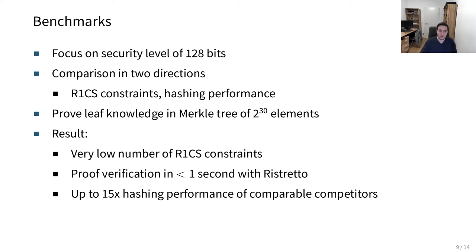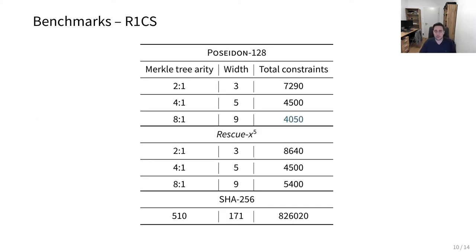We can take a closer look at that. For example, this is a table showing the rank 1 constraints we have and the number of them. Lower is better here. You can see that from an arity of 8 to 1, so essentially an arity of 8 with 9, the number of total constraints is very low, the lowest here. Also lower than these for Rescue, which is a close competitor built for essentially similar use cases.